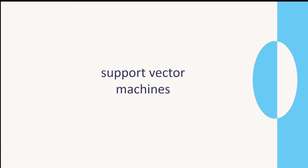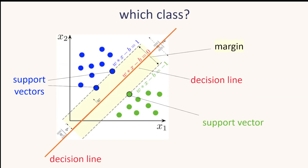Support vector machines sounds complicated, but we've kind of done this before. Instead of using a best fit line, we have a decision line. Instead of using all data points, we only use the closest ones to determine where this line is — those closest points are called support vectors. You can see the closest one in green and two in blue. The gap between them is called the margin, and the decision line is the best fit between these support vectors.